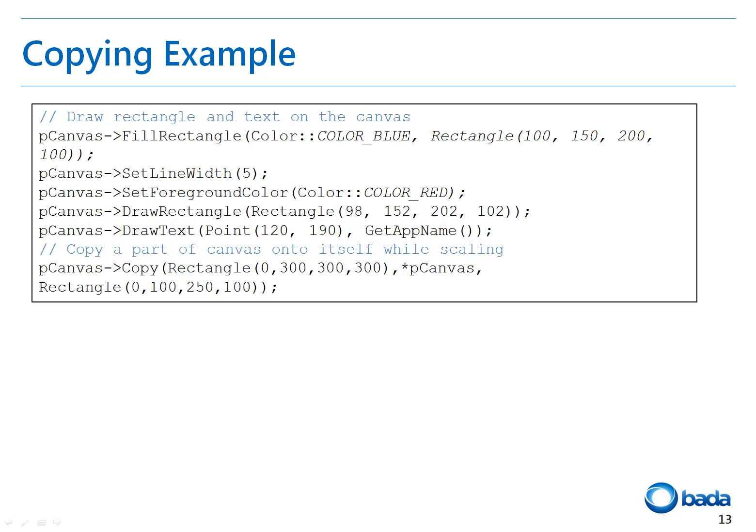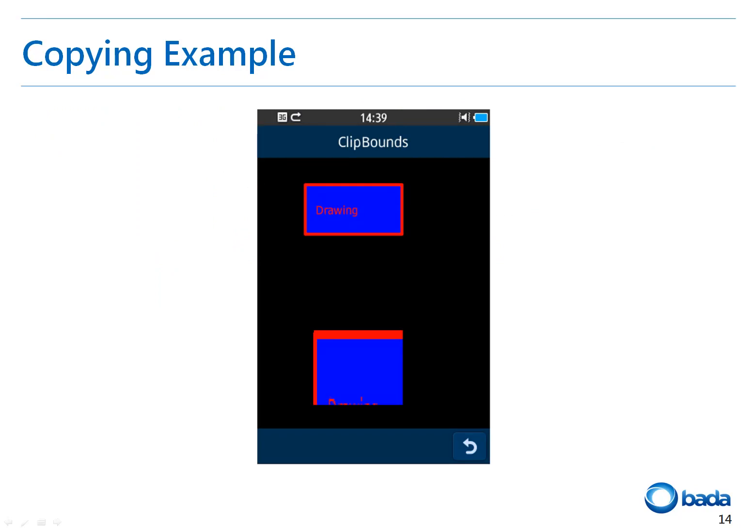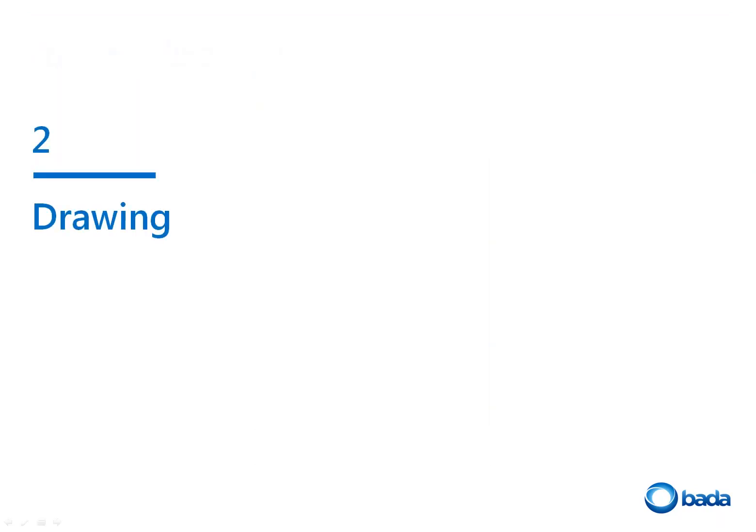This example shows the procedures to draw an object on the canvas and copy a rectangular area to another area. First, a filled rectangle is drawn in blue. Then the rectangle shape is drawn with a red line with a width of 5 pixels on the other side of the filled rectangle. Then text is drawn inside the filled rectangle. The canvas copy method is then used to copy the area of the rectangle passed as the first argument to the rectangular area passed as the third argument. The outcome is that a rectangular area has been magnified and copied to another point.